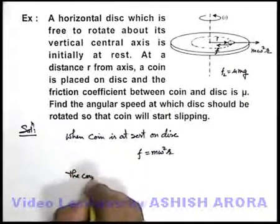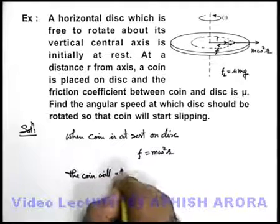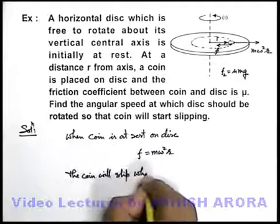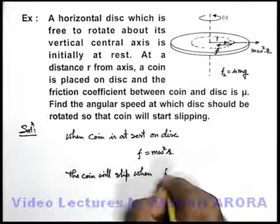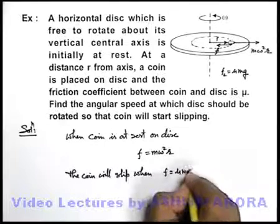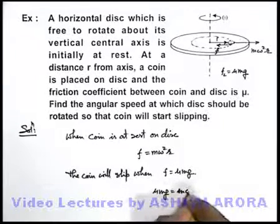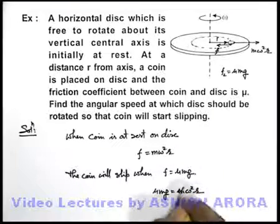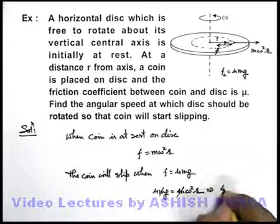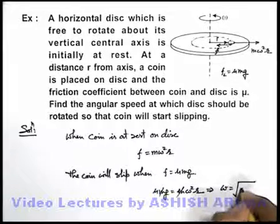The coin will slip when friction equals mu m g, or we can write mu m g equals m omega square r. Here m gets cancelled out and we get the angular speed omega as root of mu g upon r.